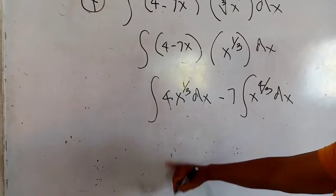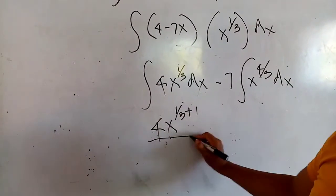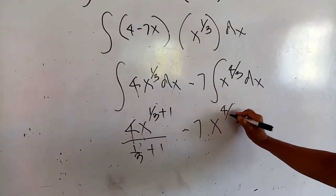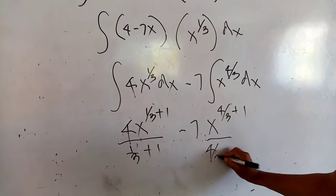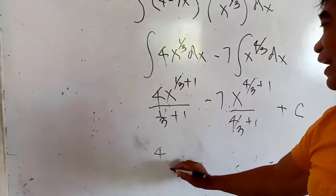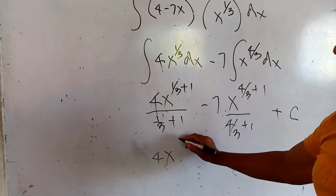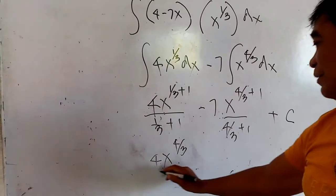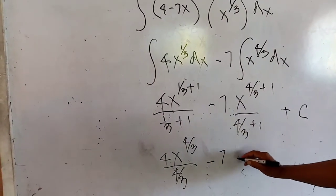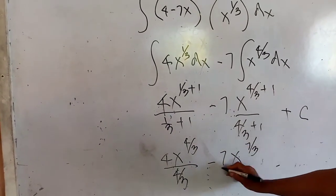Now, we remove the sign of integration using your power formula: x to the one-third plus 1, divided by one-third plus 1, minus 7 times x to the four-thirds plus 1, divided by four-thirds plus 1, plus the constant of integration c. To simplify: that would be 4 times x — one-third plus 1 is four-thirds — divided by four-thirds, minus 7 multiplied by x — 3 plus 4 is seven-thirds — divided by seven-thirds, plus the constant of integration c.